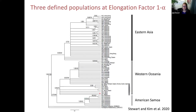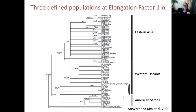We first produced a phylogeny to see how related the different strains are. We found three distinct clades: the Eastern Asian group containing isolates primarily from Hong Kong and Malaysia with some from Taiwan and Japan; the Western Oceania group containing isolates from Australia, the islands, and a few from Taiwan and Japan; and the American Samoa group containing all isolates from American Samoa. These groups seemed pretty distinct and different from one another.